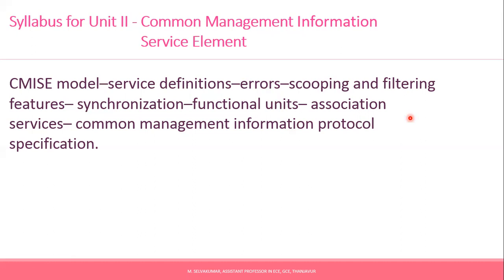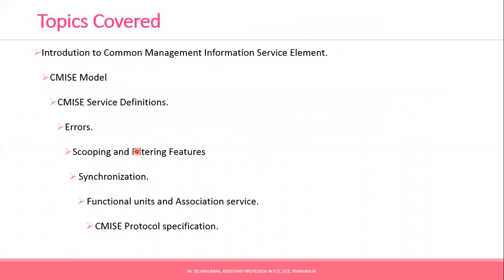Next is the Common Management Information Protocol (CMIP) structure. The topics covered in Unit 2 are: Common Management Information Service Element, CMIP model, CMIP service definition, errors, scoping and filtering features, synchronization, functional units and services, and CMIP protocol specification. These are the topics covered in Unit 2. Thank you.